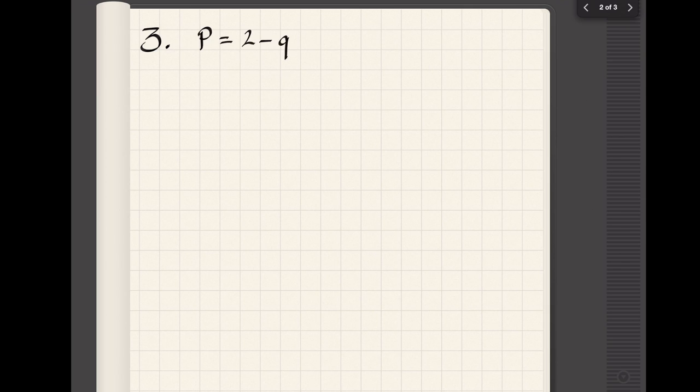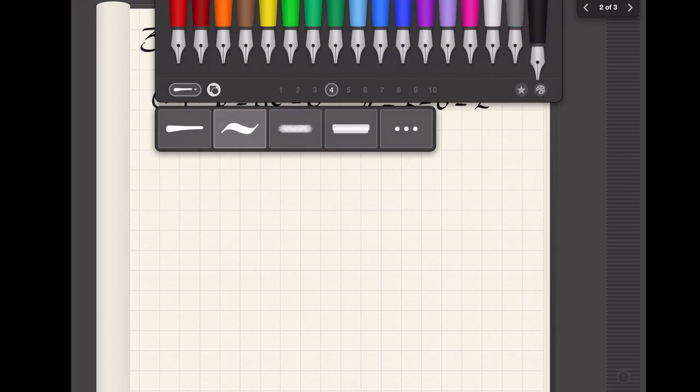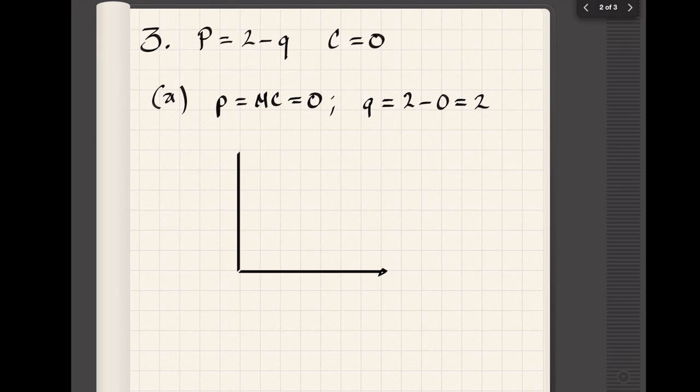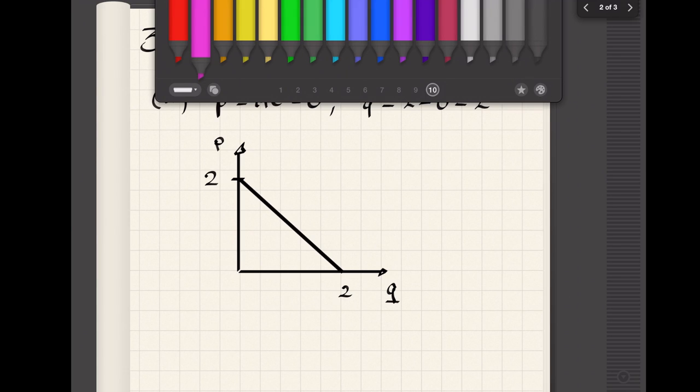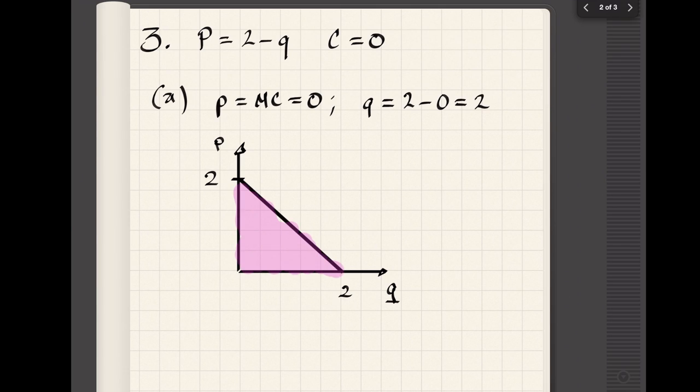Problem three was completely straightforward. I gave you the easiest market I could think about. The marginal cost is equal to zero, so in a competitive market the price would also be equal to zero because that's the only place where the demand intersects marginal cost. The quantity would be equal to two, and then the surplus would be given by the area of the triangle, which is two times two divided by two, which is equal to two.